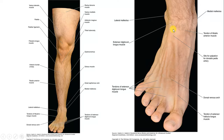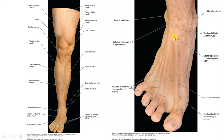Here is the extensor digitorum longus, the lateral malleolus, and the medial malleolus. There are prominent veins in this area — lateral to the tendon of extensor hallucis longus and medial to the extensor digitorum tendon — and this is the site where you can feel the pulse of the dorsalis pedis artery, the artery on the dorsum of the foot.